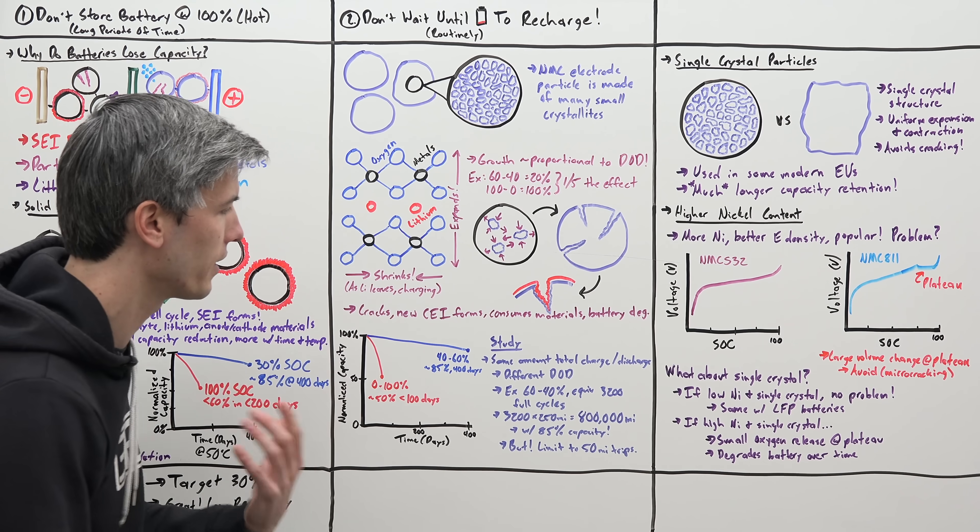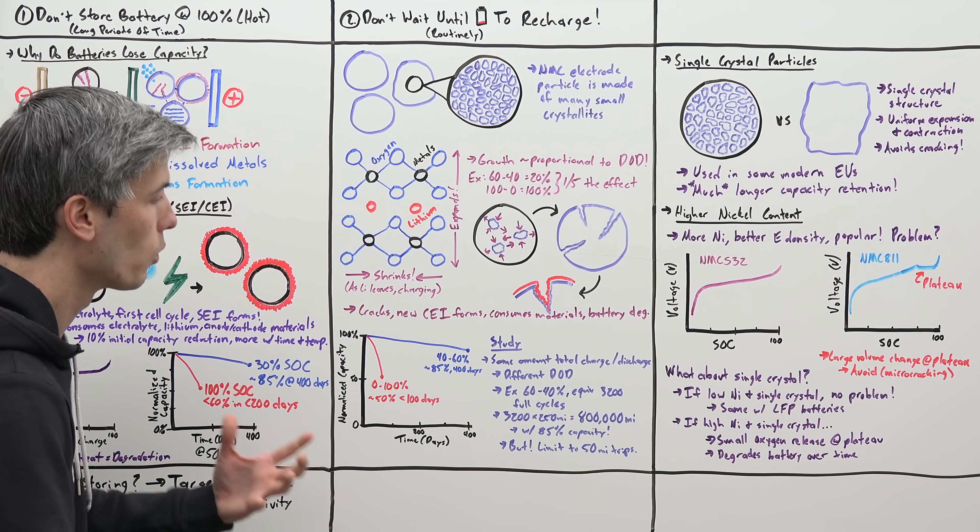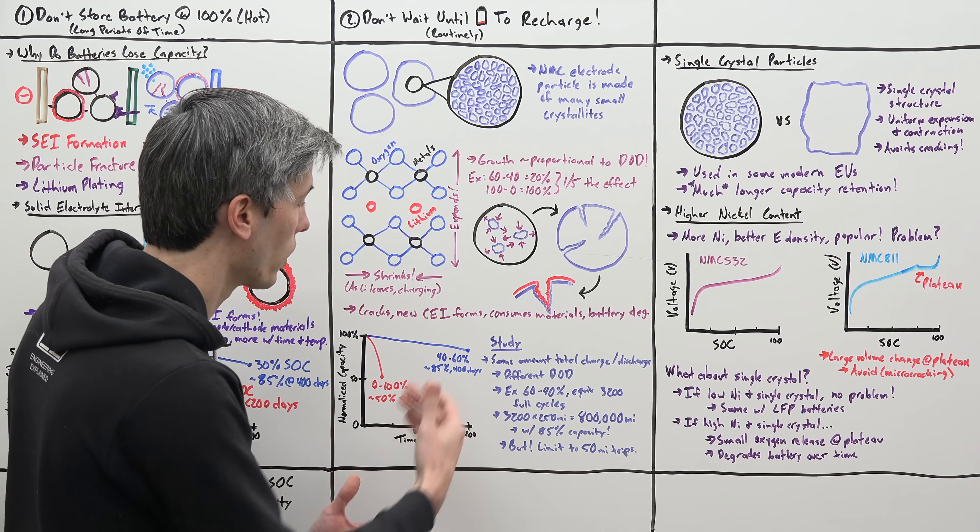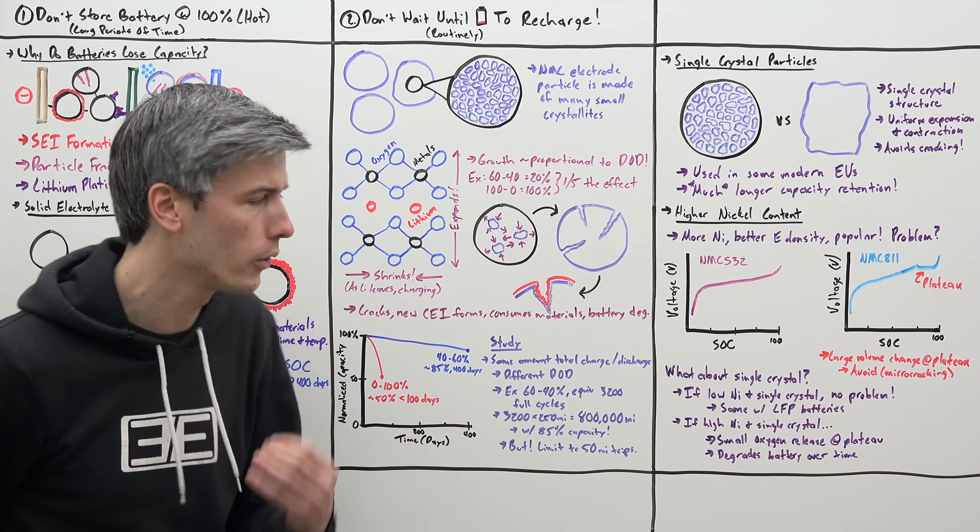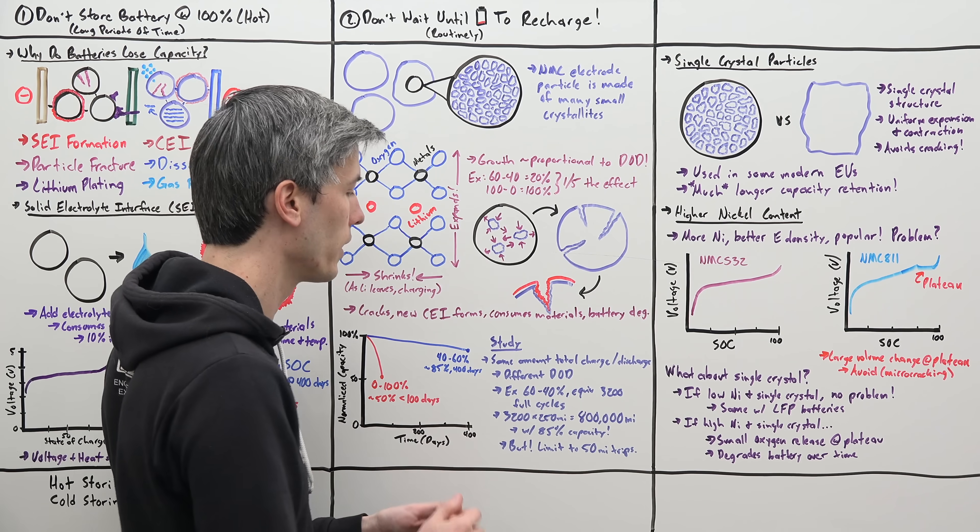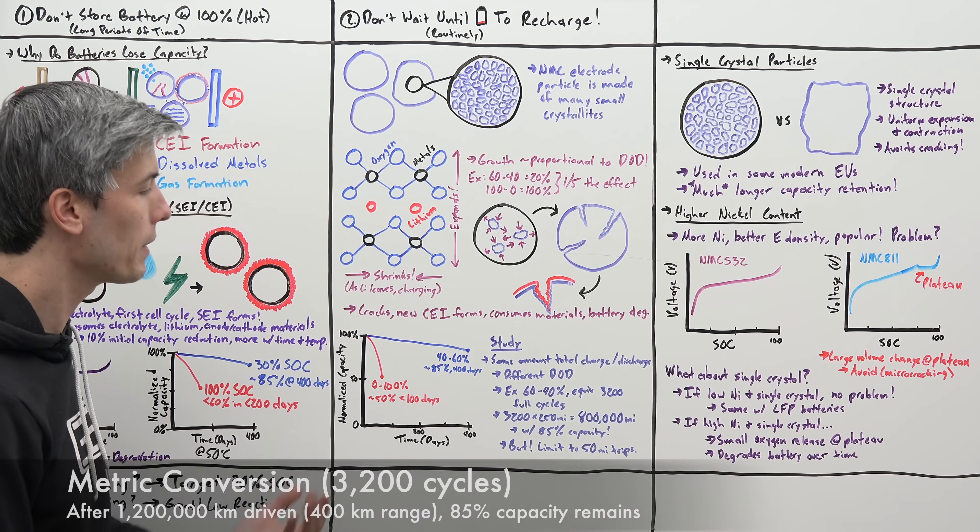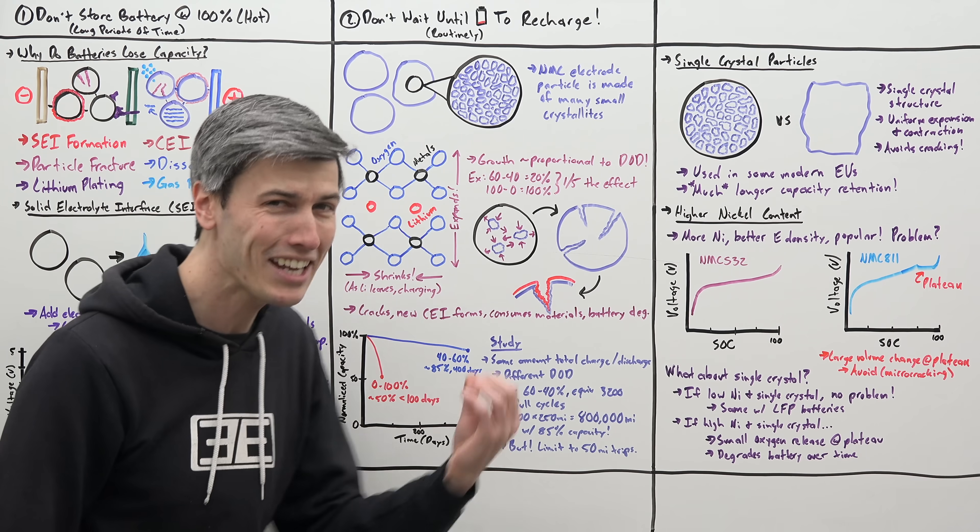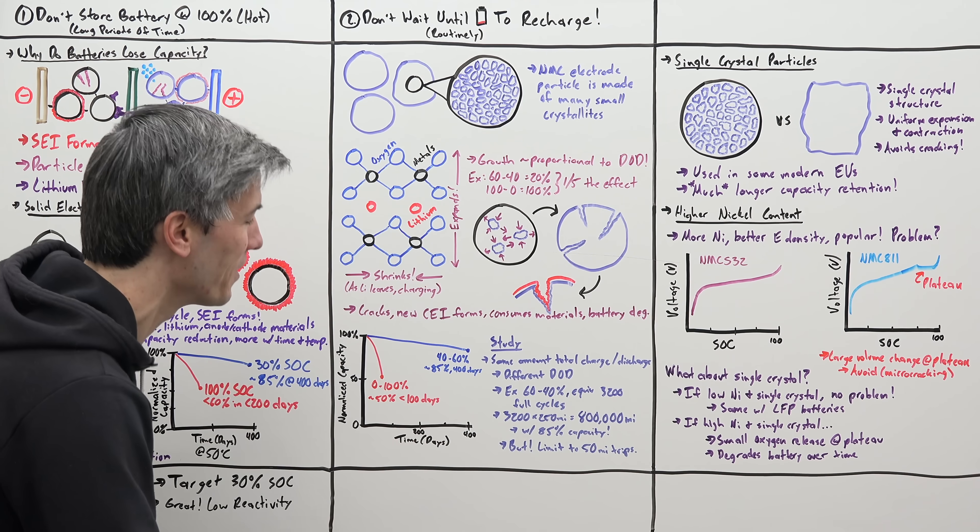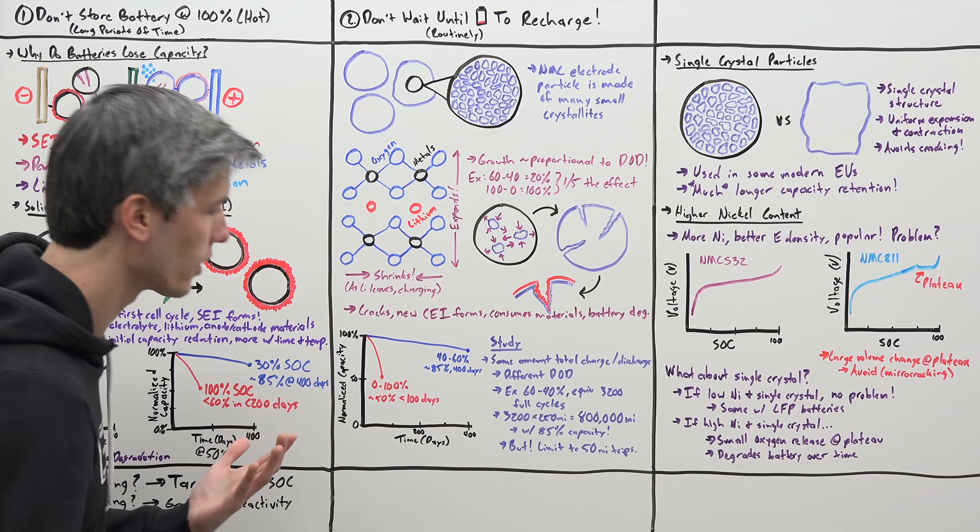Okay, well what does this mean as far as context? So going from 60% to 40% constantly was the equivalent after 400 days of about 3200 full cycles on that battery. Now if you were to have a battery on an EV that had a 250 mile range, well that means this battery would last about 800,000 miles before its degradation reached about 85%. So that's incredible, right?